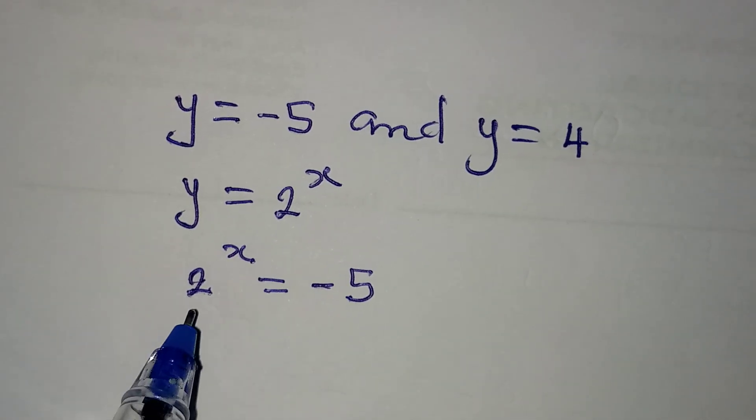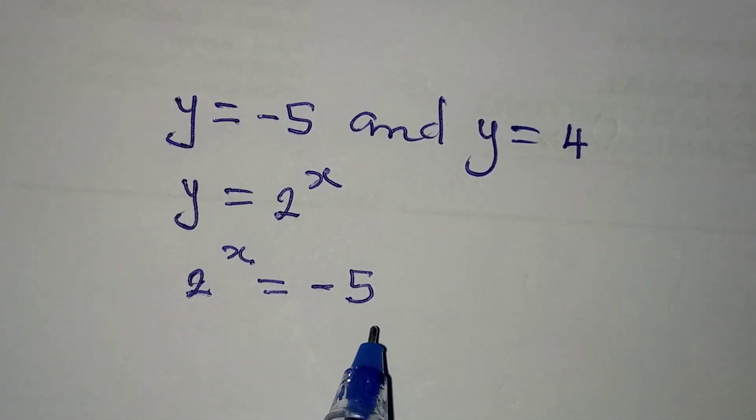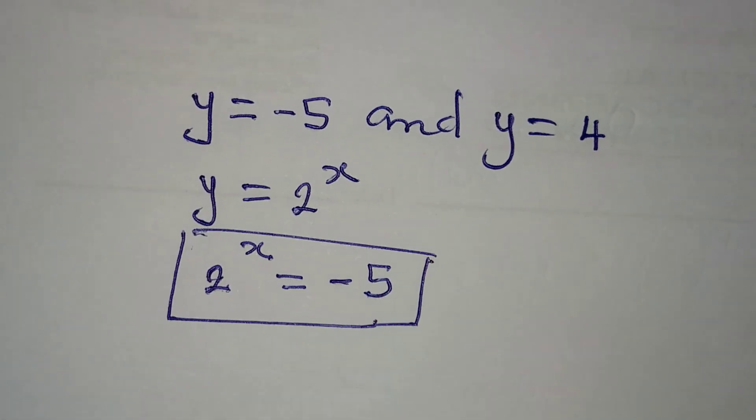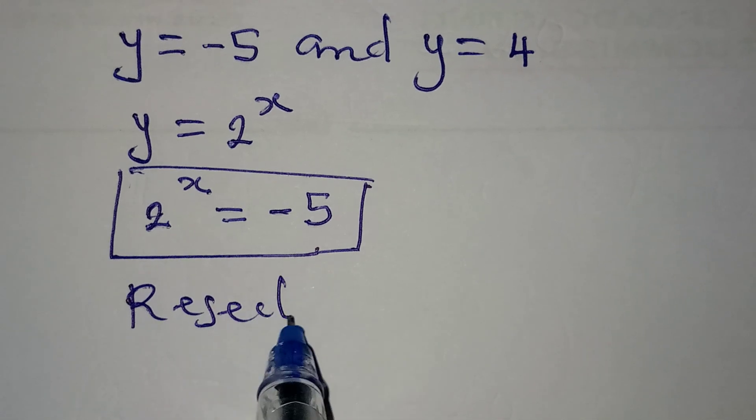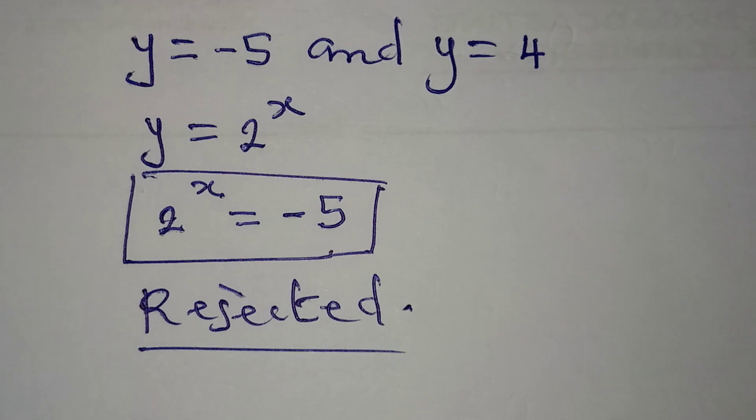You cannot raise 2 to any real number and get minus 5. In that case, from here, the value of x will be rejected. The value of x will be rejected.